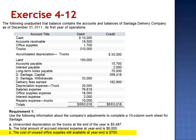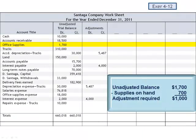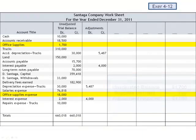Letter C: the cost of unused office supplies still available at year-end is $700. The unadjusted balance is $1,700, which means we must have used $1,000 of office supplies. The adjusting entry is a debit to office supplies expense for $1,000 and a credit to office supplies.